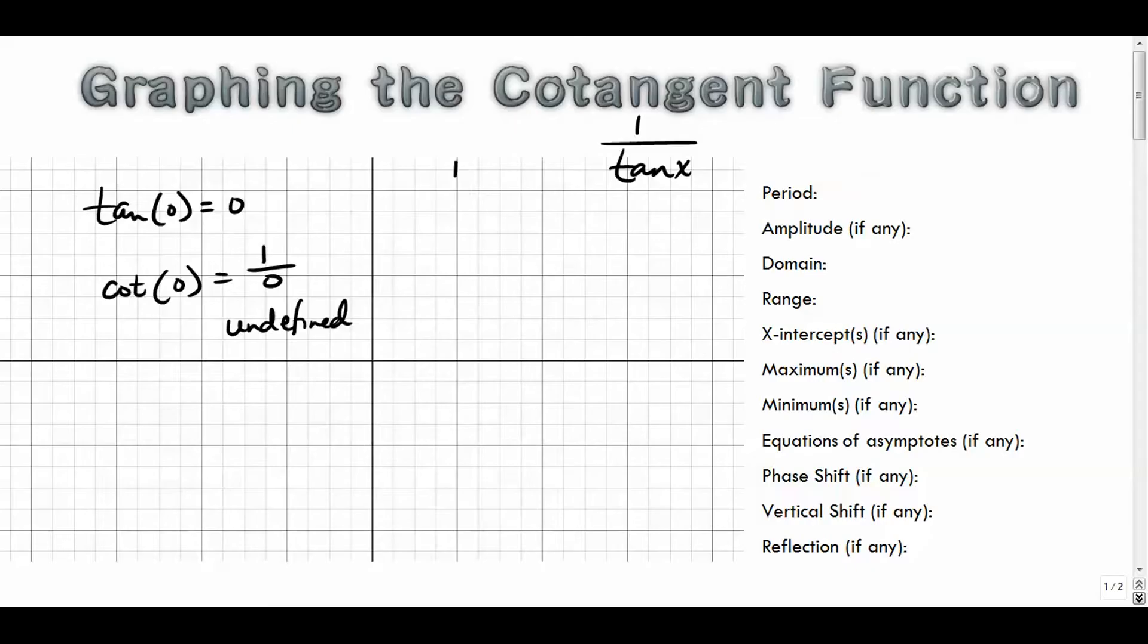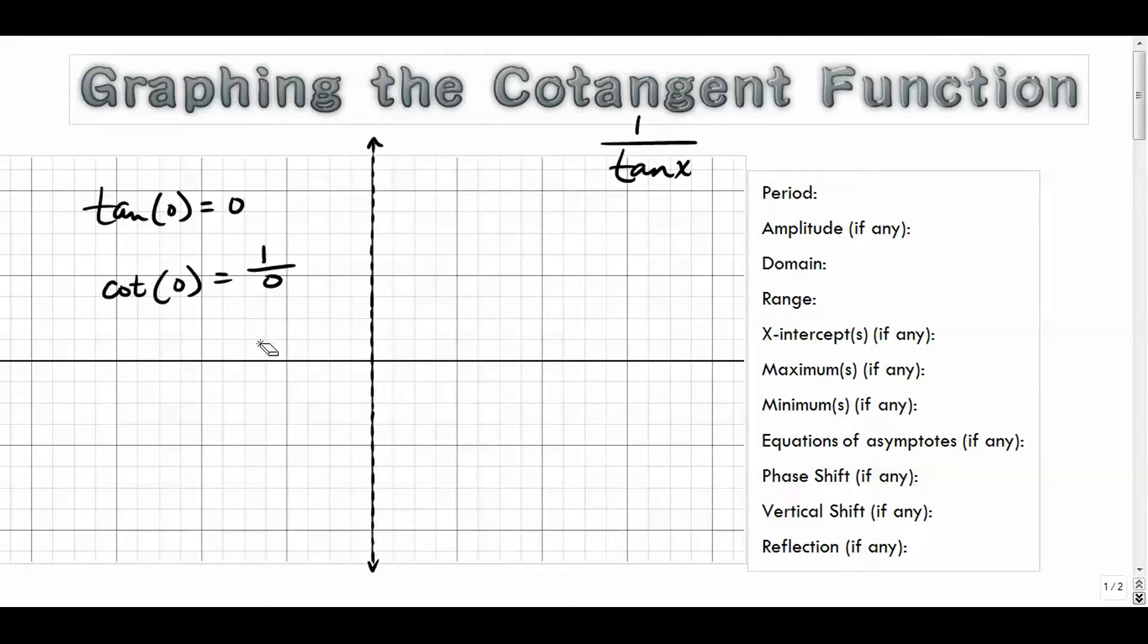So where the tangent was shaped like this and went through zero, the cotangent doesn't at all. The cotangent doesn't even exist at zero. So I'll start by putting my vertical asymptote here, because there is no value there. Right away, it's a little bit different. It's going to have the general same shape, kind of be reflected and just shift it over a little bit. So let's get some other values in here.